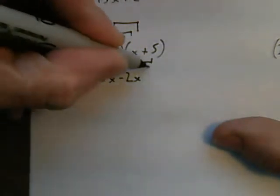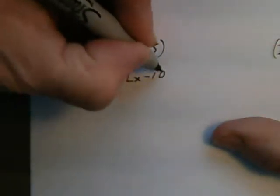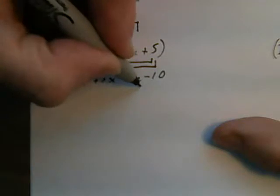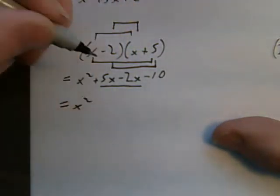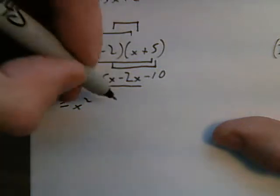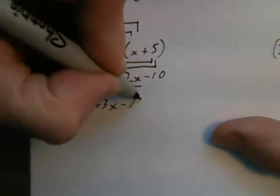Inside, negative 2 times plus 5 is negative 10. Collect my like terms. Plus 5 minus 2 is plus 3x minus 10.